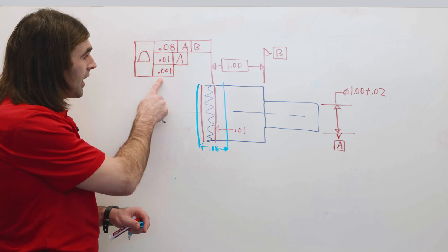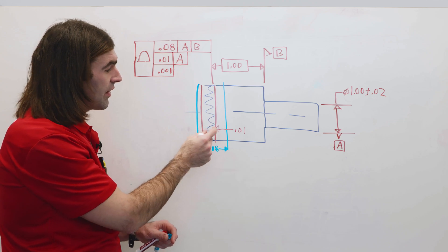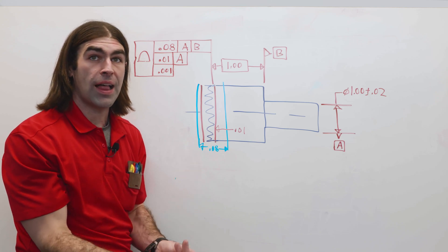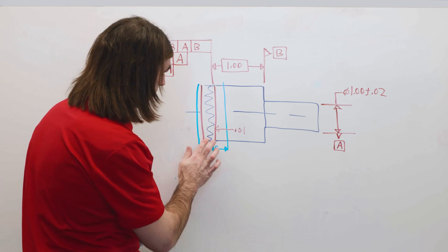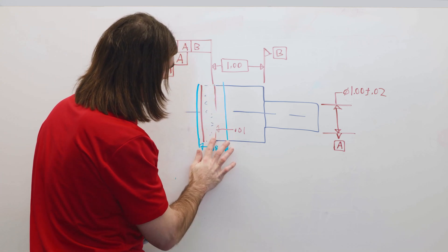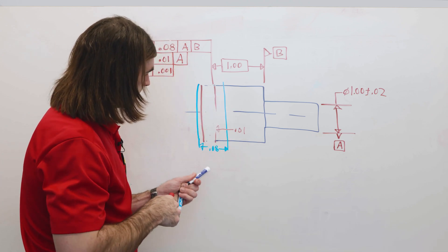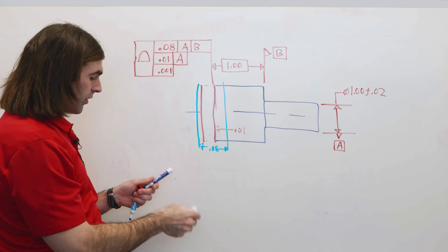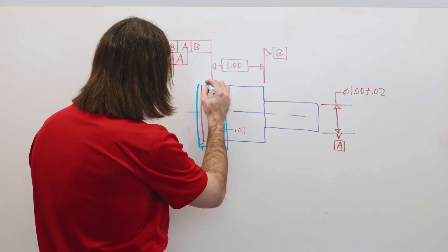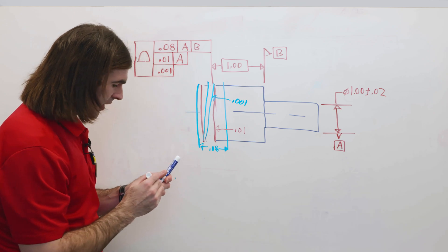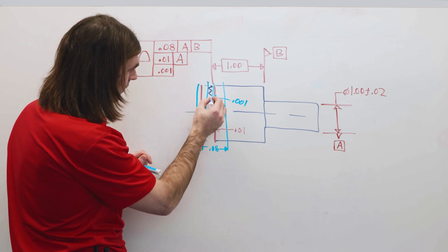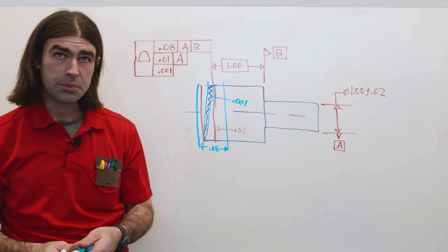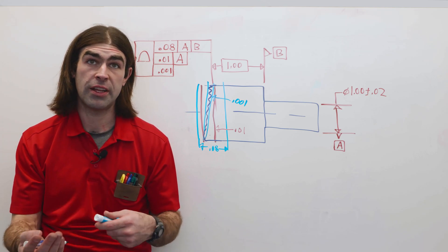So what this is saying is this surface has to not only be within this 80 thousandths, this 10 thousandths, it also has to be flat to within one thousandths. So within this 10 thousandths tolerance zone to A, now we're going to have another tolerance zone that's one thousandths. And that's separate from any of the other ones.